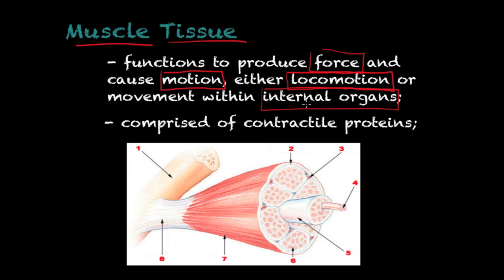One example of internal organ movement is muscle tissue that exists in some internal organs that need movement in order to carry out their functions. One example is the digestive tract, which needs to push food from one point to another in order to digest it. This movement is caused by a special type of muscle tissue.